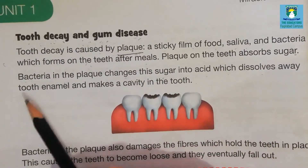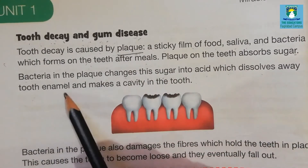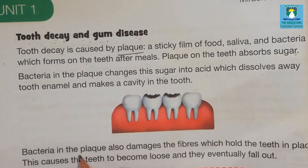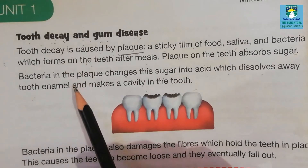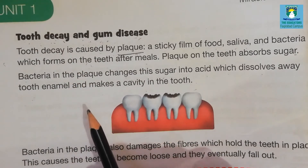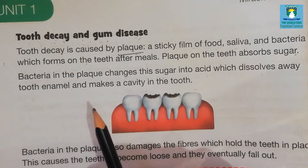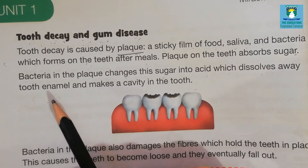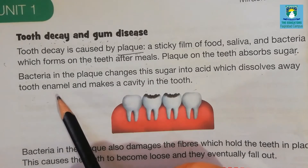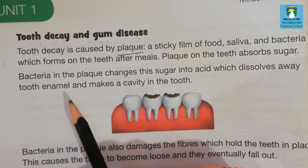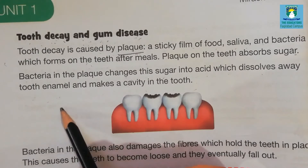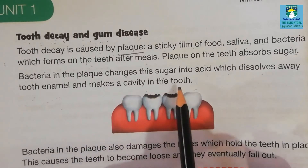Bacteria in the plaque changes this sugar into acid, which dissolves away the tooth enamel and makes a cavity in the tooth. The bacteria present in the plaque change sugar into acid, then this acid dissolves the tooth enamel — the outer hard part of the teeth — and makes a cavity in the tooth.